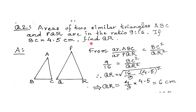BC is given as 4.5 cm. Put 4.5 in place of BC. Cross multiply to find QR. QR = √(16/9 × 4.5²). The square root of 16 is 4, square root of 9 is 3, and square root of 4.5² is 4.5. So 3 cancels with 4.5 to give 1.5; then 1.5 × 4 = 6 cm.